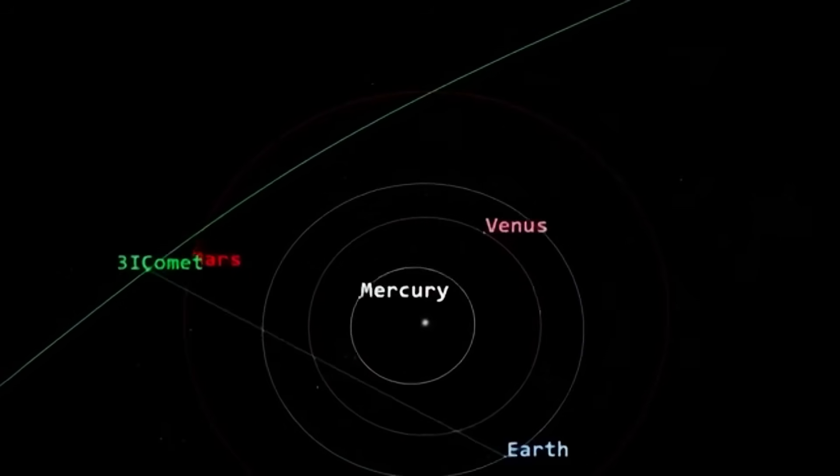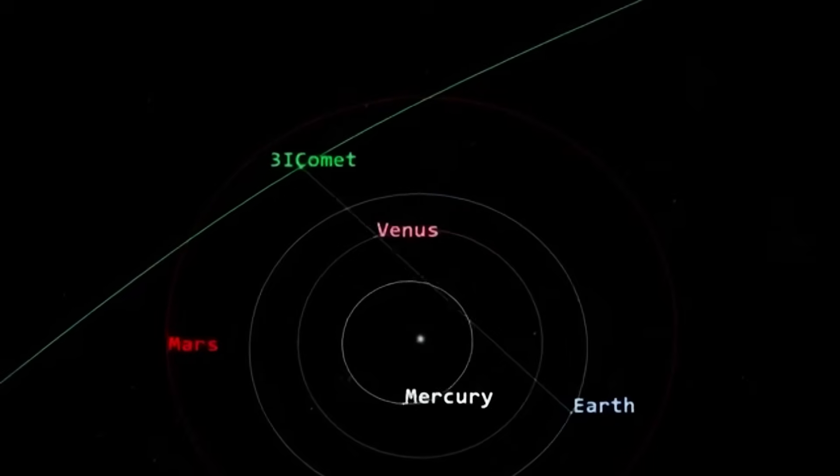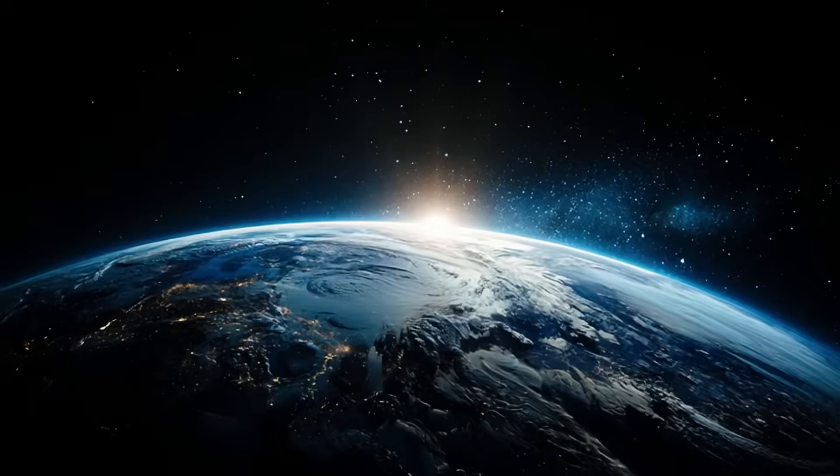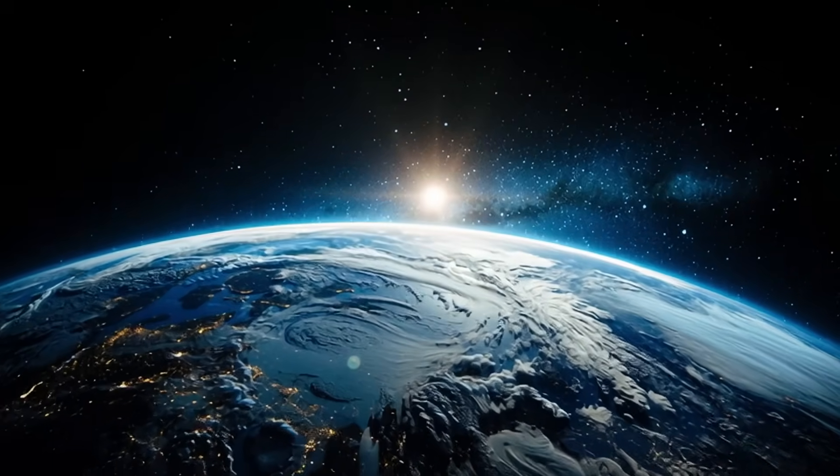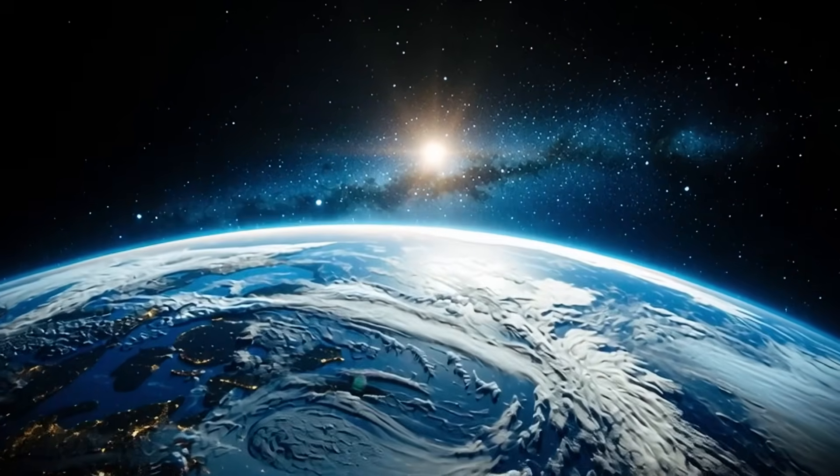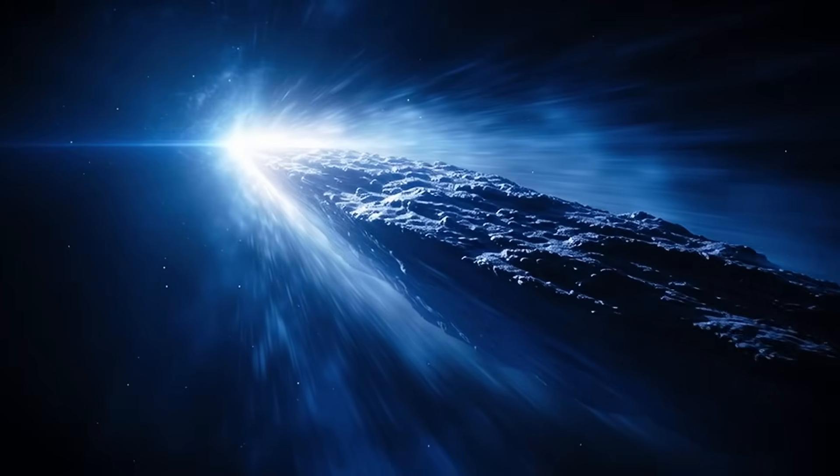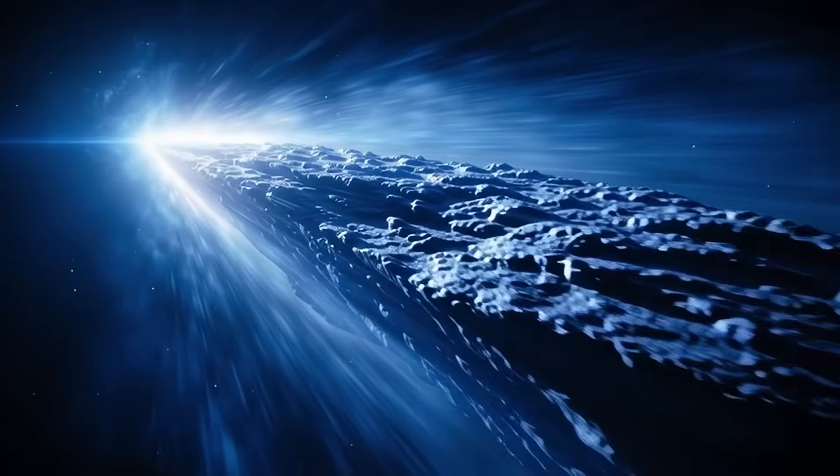5. Atypical chemical composition. Spectra revealed unusual nickel predominance, almost complete absence of iron, and high ratio of carbon monoxide to water. This composition suggests origin in astrophysical environments completely different from known ones.